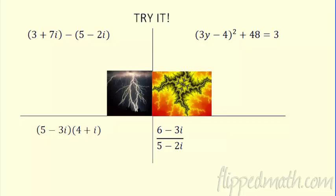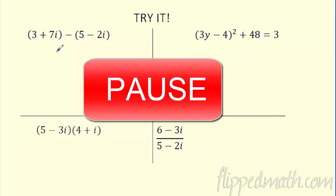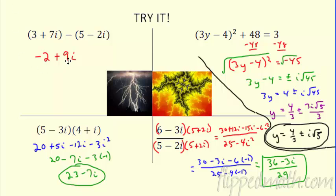Here are four practice problems for you to try. Pause and work through them. Answers: for the first, be careful with the negative sign. For the equation, the answer is four-thirds plus or minus i√5. For the multiplication, double-distribute and simplify. For the final one with the conjugate, the answer is (36 minus 3i) over 29. Good luck with practice!